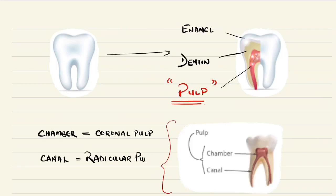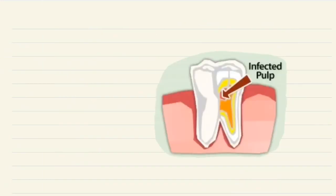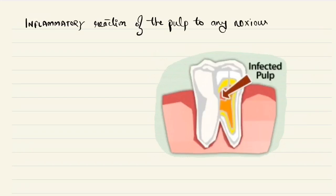The root canal pulp is referred to as the radicular pulp. Now when there is an infection of this pulp, the pulp reacts, so this inflammatory reaction of the pulp tissue to any of the noxious stimuli or harmful stimuli is referred to as pulpitis.